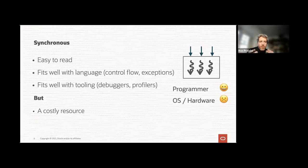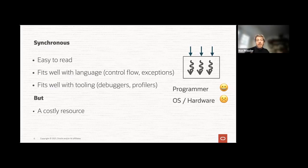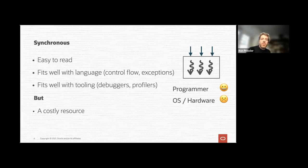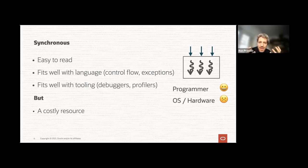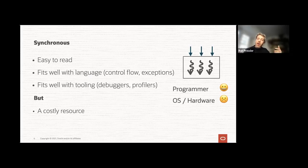Java is built around threads, and the simplest way to write a Java server — when we talk about concurrent applications we usually talk about servers because servers need to handle many different requests concurrently — is to write a synchronous model, sometimes called thread-per-request. The way Java programmers have been trained since Java 1.0 over 25 years ago is to start and end handling an incoming request on a single thread. It fits very well with the language — it's harmonious with the platform and the tooling — but it holds on to a thread for the entire duration.